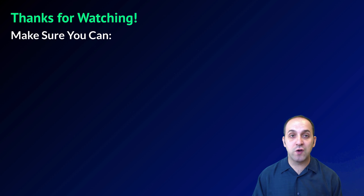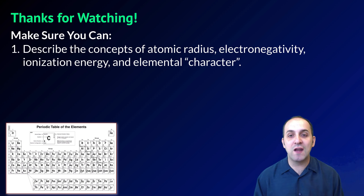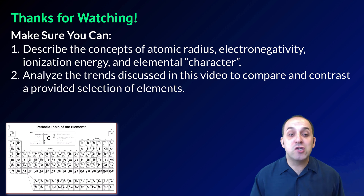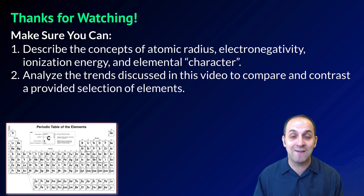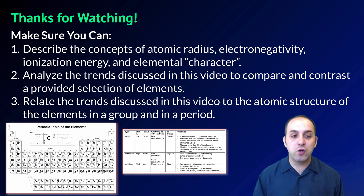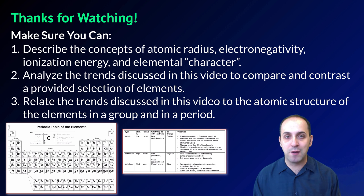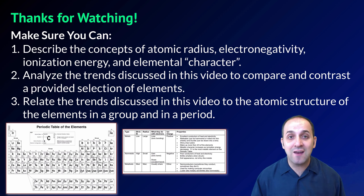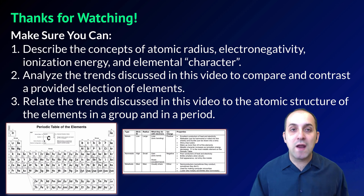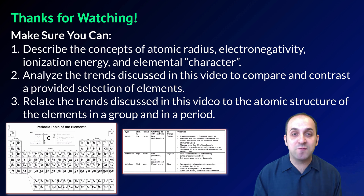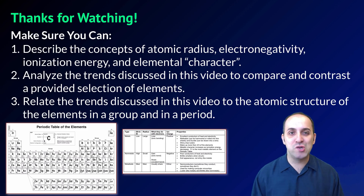Thanks for watching our discussion of periodic trends. Make sure you can describe the concepts of atomic radius, electronegativity, ionization energy, and elemental character. Make sure you can analyze the trends to compare and contrast a provided selection of elements, and that you can relate these trends to the atomic structure of elements in a group and in a period. If you can do those things, you're doing great. Leave any questions in the comments below or get in touch through the info field. Thanks so much for watching — have a great day.